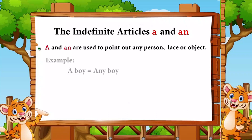'A' and 'an' are used to point out any person, place, or object. This means they do not refer to a particular object or place. Example: 'a boy' means any boy, not a particular boy. 'An apple' means any apple.